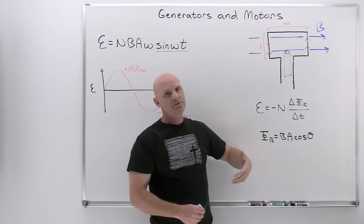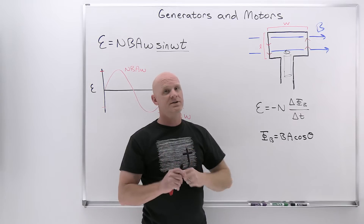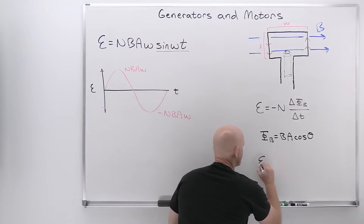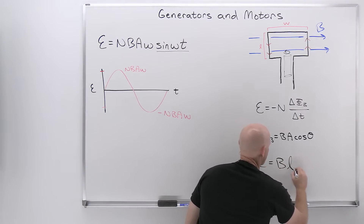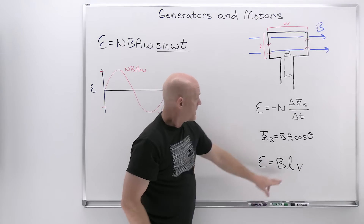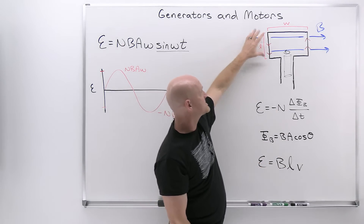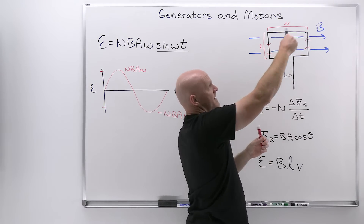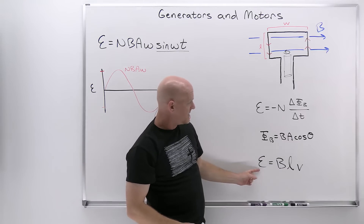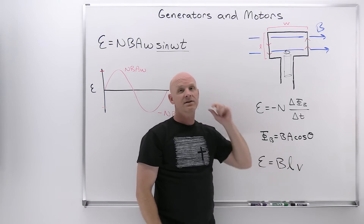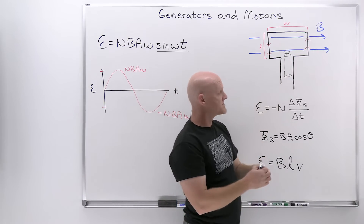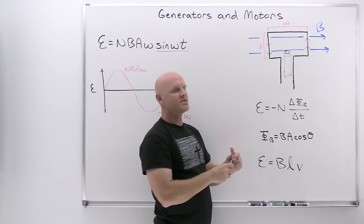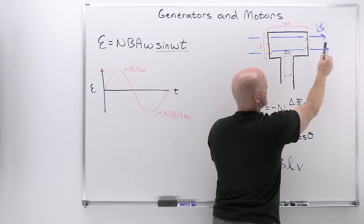We also learned in the last lesson about Motional EMF. We saw that Motional EMF can be derived from Faraday's Law, with a similar expression E = BLV, where L was the length of the rod that's moving. In this case, instead of looking at this as a rotating wire, let's say we looked at it as a rod we were just pulling out of the board. As we pulled it out, the EMF generated would be equal to BLV in magnitude. The same thing would happen on the other side as it rotates — instead we'd be pushing it into the board.